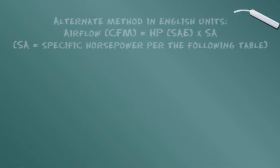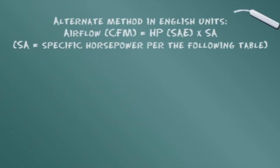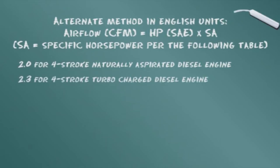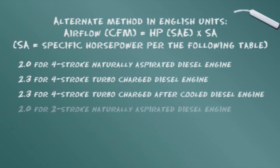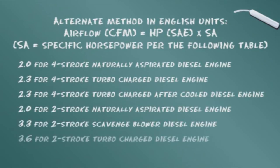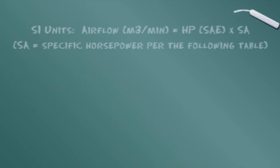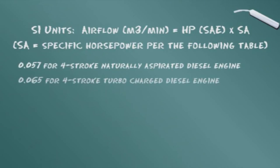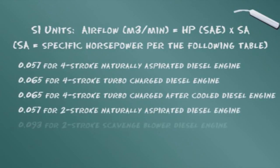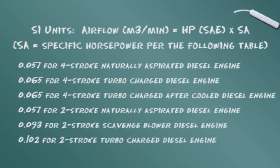This second formula is an alternate way of calculating airflow using engine horsepower. In this formula, SA represents the value for specific horsepower, which you should take from the table on the screen. This table is for use with the English formula. In the case of SA, specific horsepower, the English and metric figures are completely different. This separate table of specific horsepower values is for use with international SI calculations.